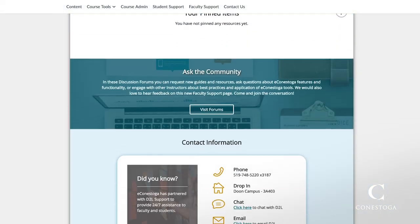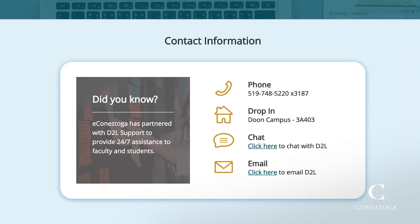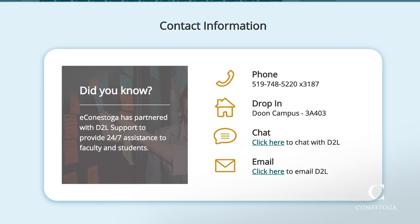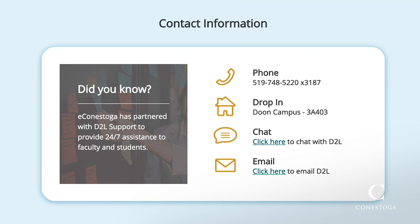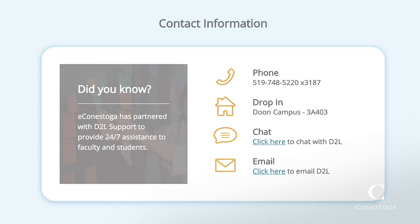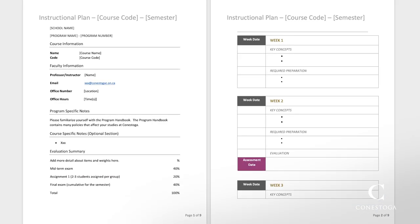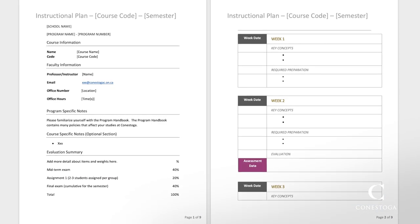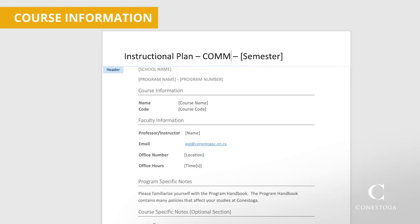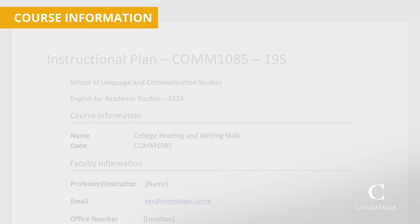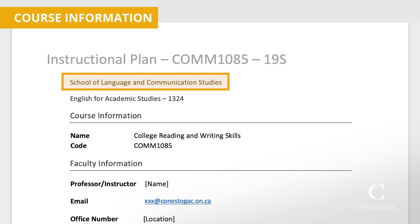If you are having difficulty, get in touch with eConestoga for support. At the bottom of the Faculty Support page is the contact info for eConestoga. Let's break down how to fill in the different sections. In the course information section, enter your course code and semester at the very top.